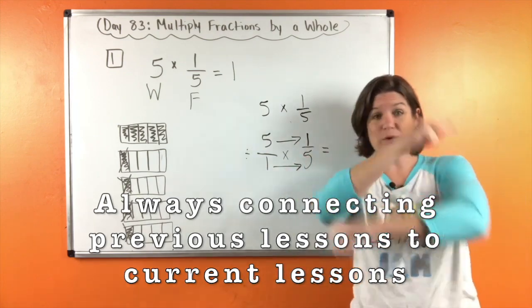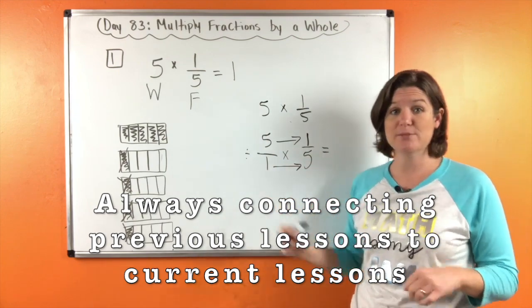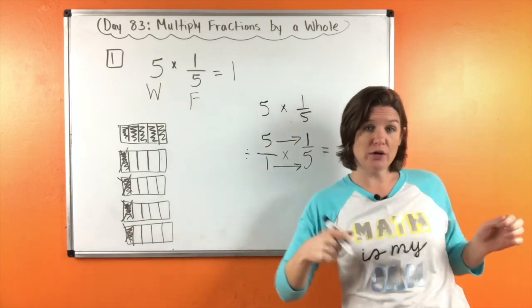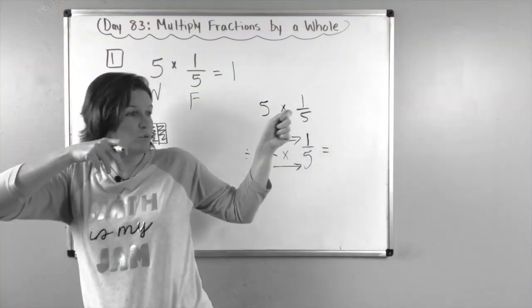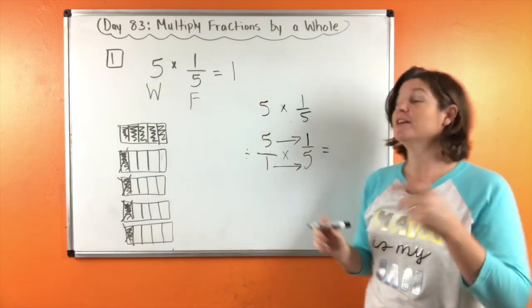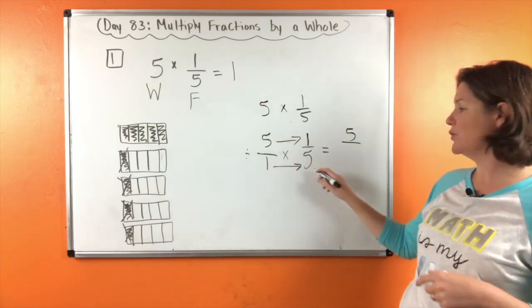So five times one equals five, and we're going to multiply across in the denominator. One times five equals five, and five fifths is the same thing as what? One whole.